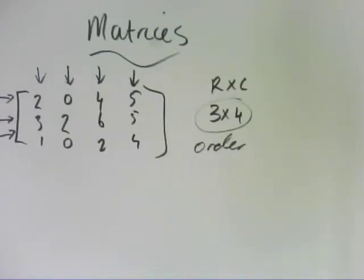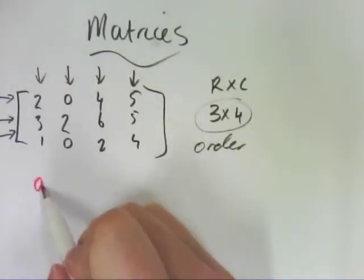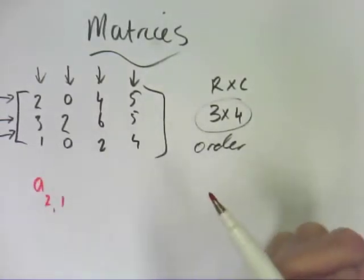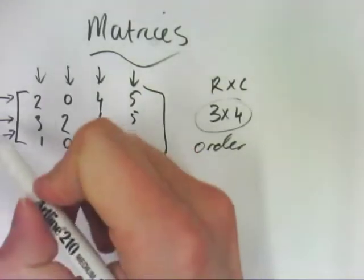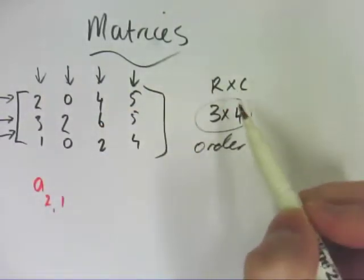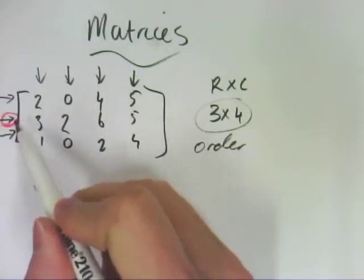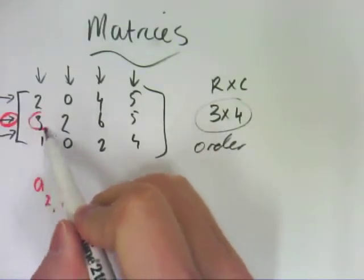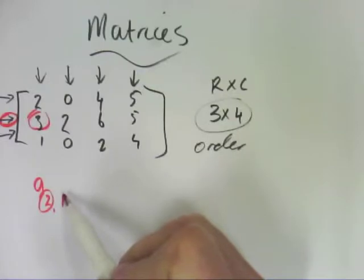To find any given value in a matrix, you can be asked to find, for example, A21. So if this was matrix A and you were looking for number 21, then you go in the second row, first column.